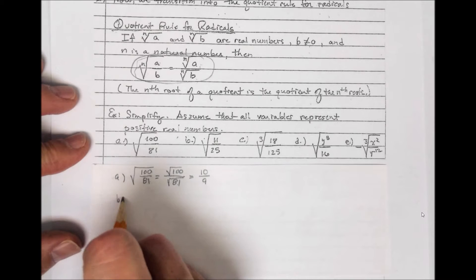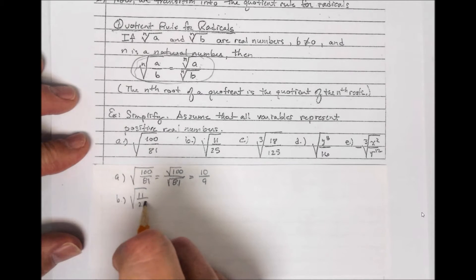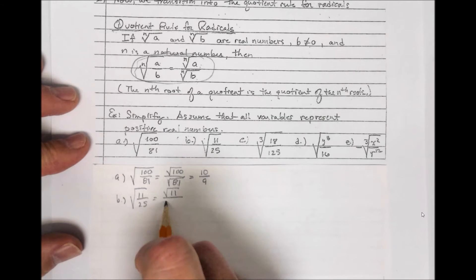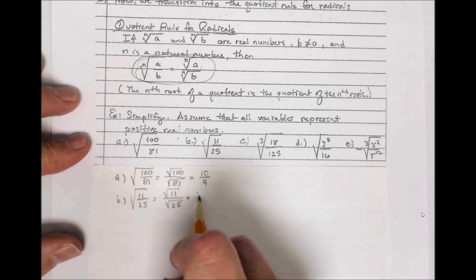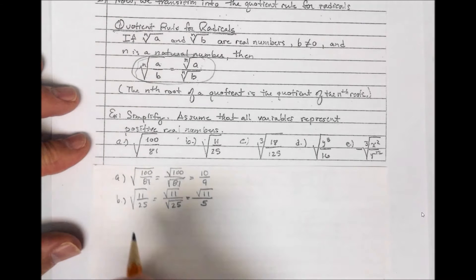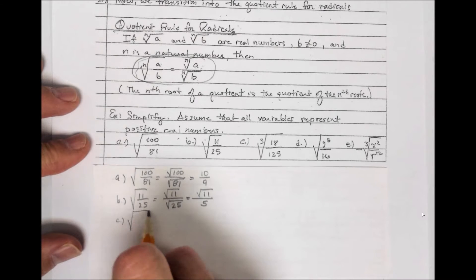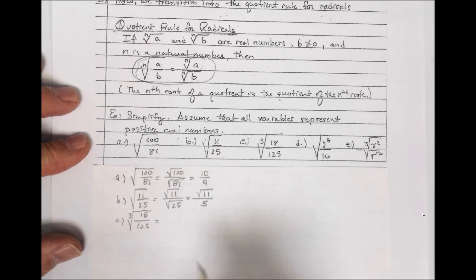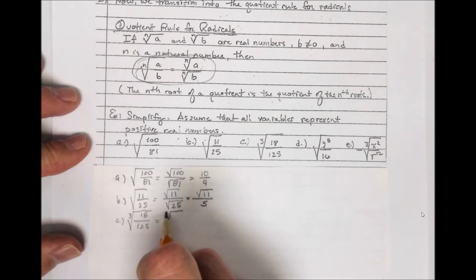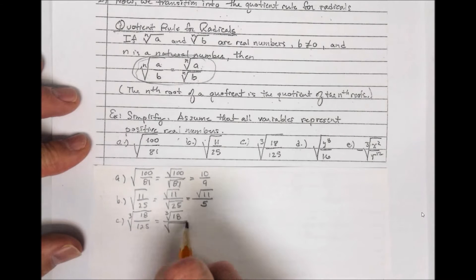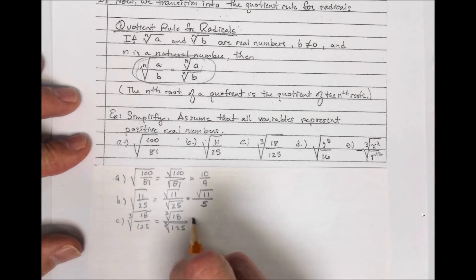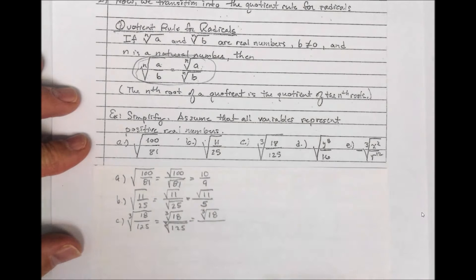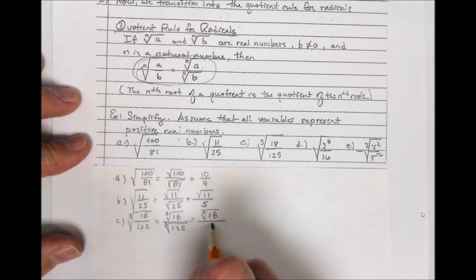The next problem: when I break it into a quotient of radicals, the square root of 11 does not come out to a whole number — it's irrational — so I leave it the same, but I take the square root of 25 and write 5 as the denominator. For part C, the cube root of 18 over 125: this is the cube root of 18 over the cube root of 125. The numerator doesn't simplify since 18 is not a perfect cube, but 125 is 5 times 5 times 5, so the cube root of 125 is 5.